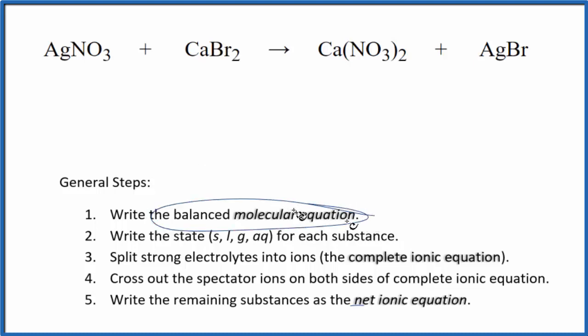First thing we need to do is balance the molecular equation. I have two nitrate ions here and just one over here, so I'm going to put a 2 in front of the AgNO3. Now I have two silver atoms and just one here, so I'll put a 2 here. That gives me 2 silver, 2 bromine, but I have 2 bromine - that's good, and I have calcium. So this equation is balanced.